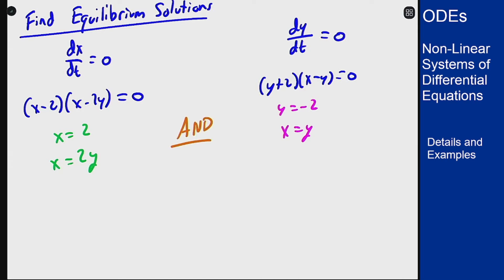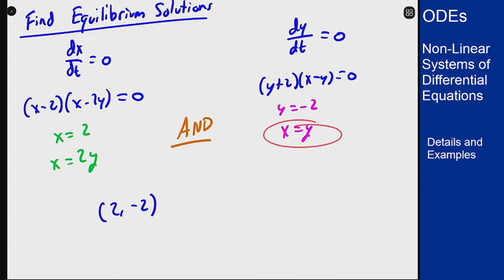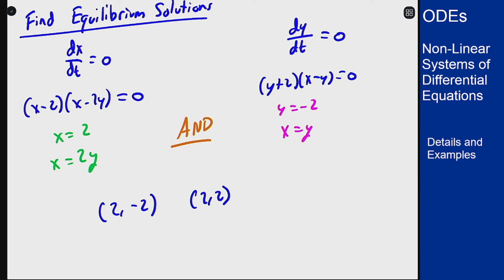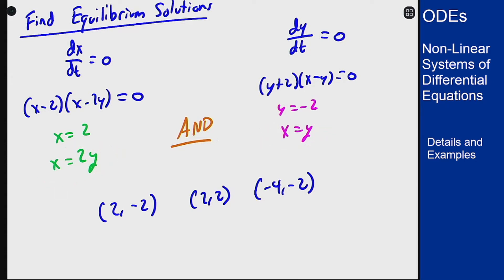The points I get are: (2, -2) from pairing x=2 with y=-2; (2, 2) since if x equals y and x equals 2 then both are 2; (-4, -2) from x=2y with y=-2, giving x=-4; and (0, 0) from x=2y with x=y, where the only intersection is the origin. So there are my four equilibrium solutions.